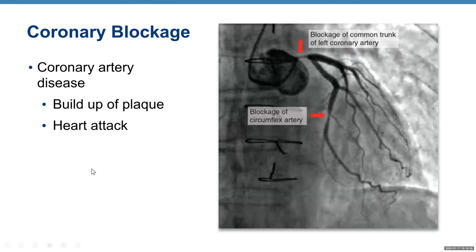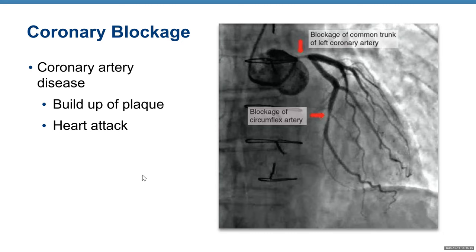Coronary artery disease occurs when plaque builds up and restricts blood flow to the heart muscle, which can cause a heart attack. Here is an angiogram showing coronary blood vessels, and here is a blockage in the circumflex artery. The affected muscle tissue experiences ischemia — low oxygen levels — and if blood flow is not restored, it leads to tissue death: myocardial infarction or heart attack.